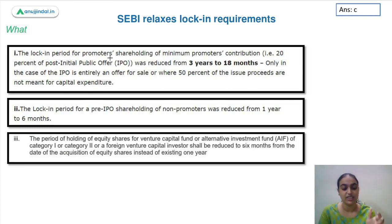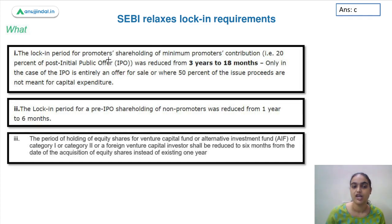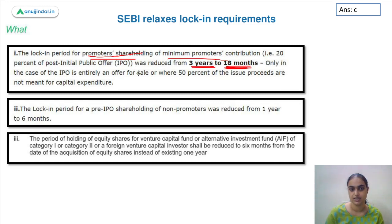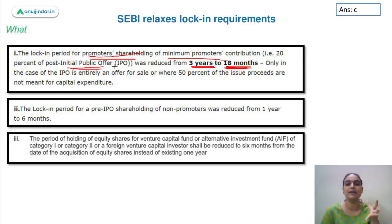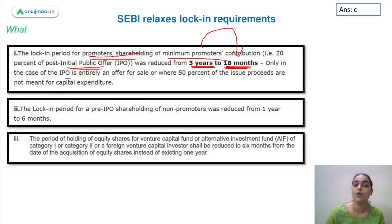SEBI has relaxed the lock-in requirement. The lock-in period means you cannot transfer shares — you must hold them for a certain period. The lock-in period for promoters' shareholding of minimum promoters' contribution was three years and has been reduced to 18 months in certain cases. The minimum promoters' contribution is 20 percent of post-IPO capital.